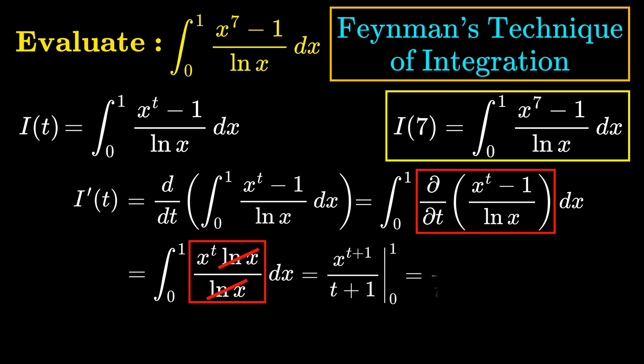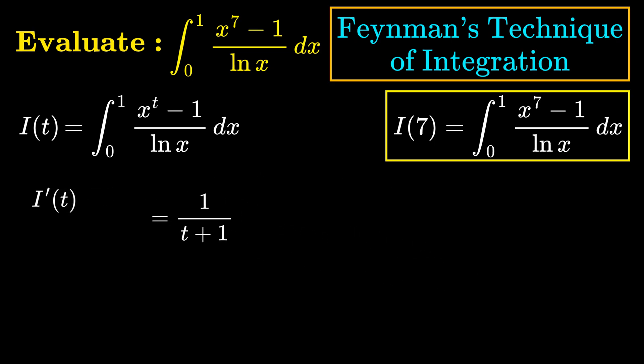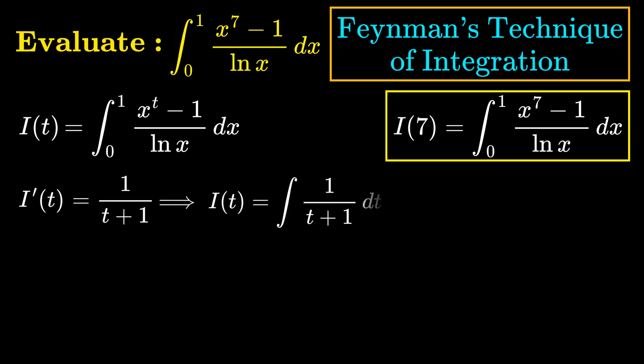Evaluating at 0 and 1, we get 1/(t+1). This is the derivative of I(t), and to get back I(t) we can simply integrate both sides, so I(t) is the integral of 1/(t+1) dt.